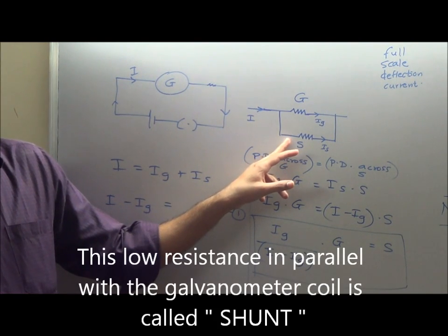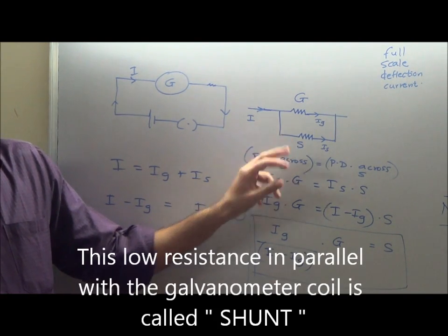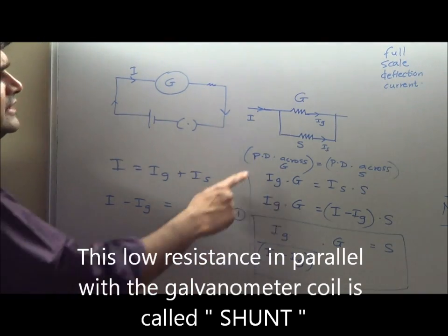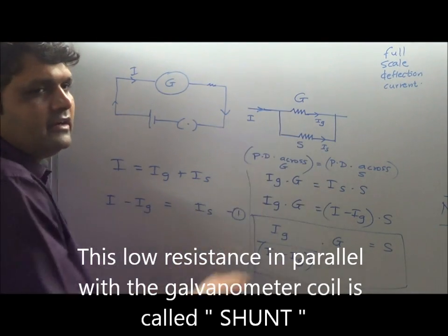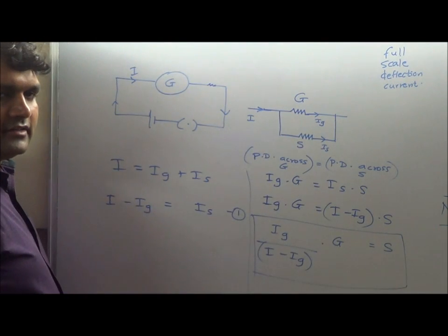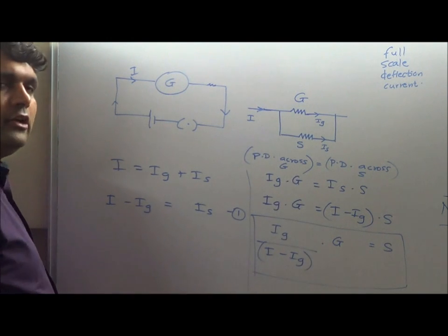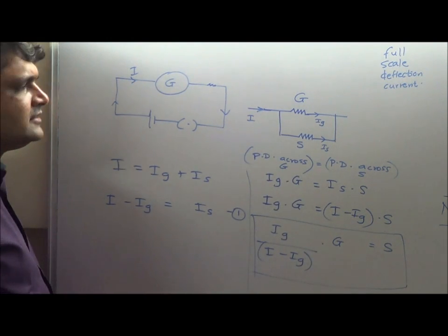That low resistance connected in parallel with the galvanometer coil is called shunt resistance. Because it is connected in parallel, it is called shunt resistance. Let's see how we can find the value of this shunt resistance.